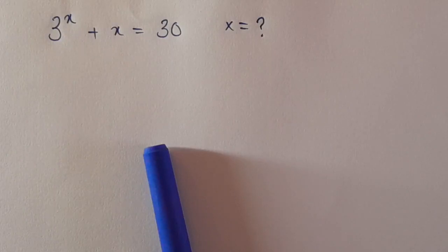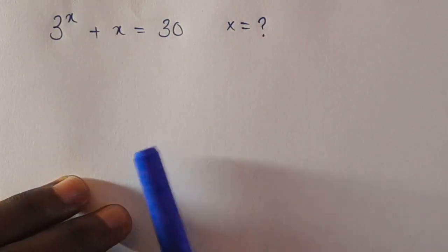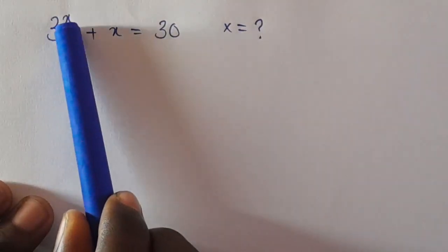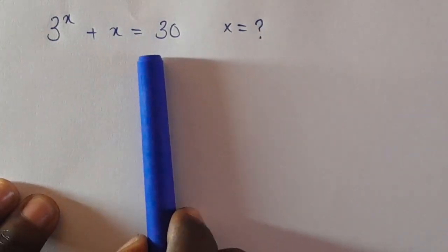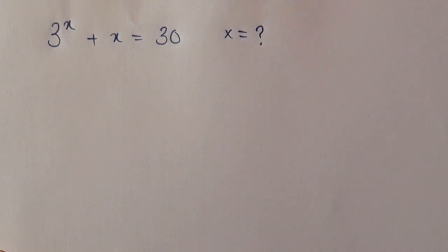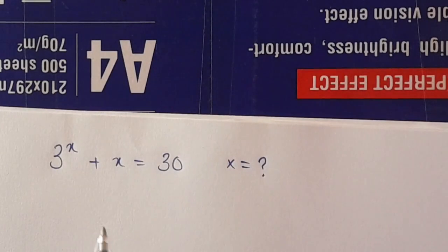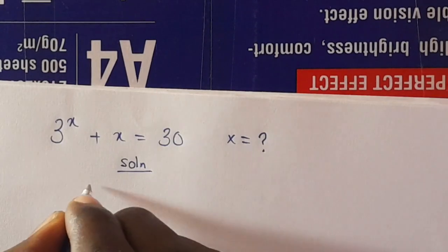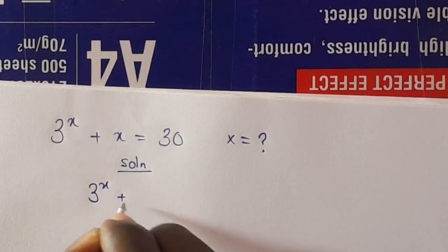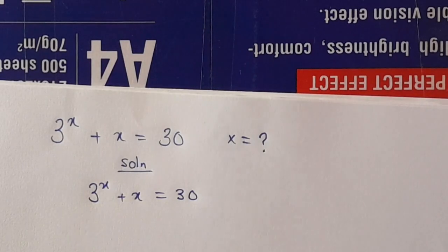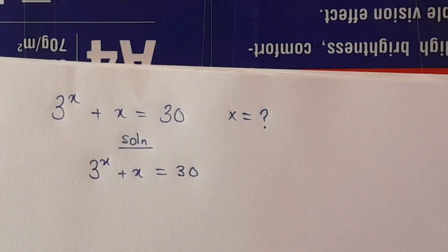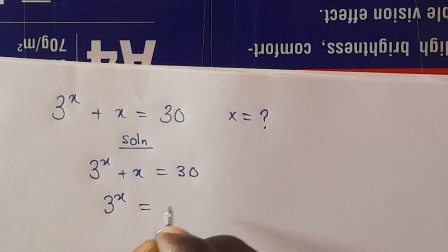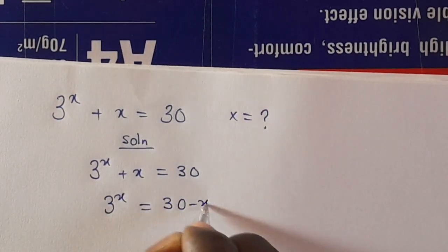Hi guys, welcome back to my YouTube channel. Today we want to find the value of x given that you have 3 raised to the power x plus x equals 30. So let's have the solution. We have 3 raised to the power x plus x equals 30. Let's rearrange this: we have 3 raised to the power x equals 30 minus x.